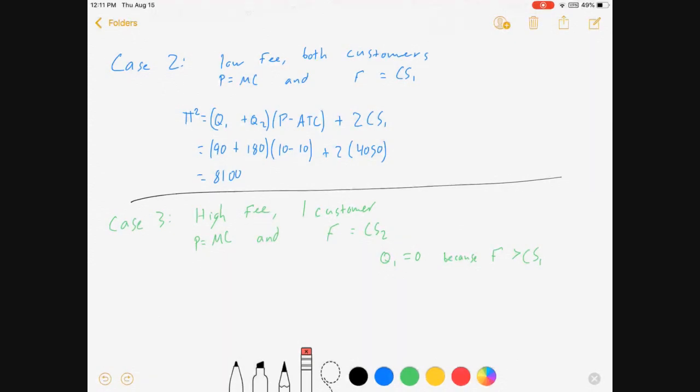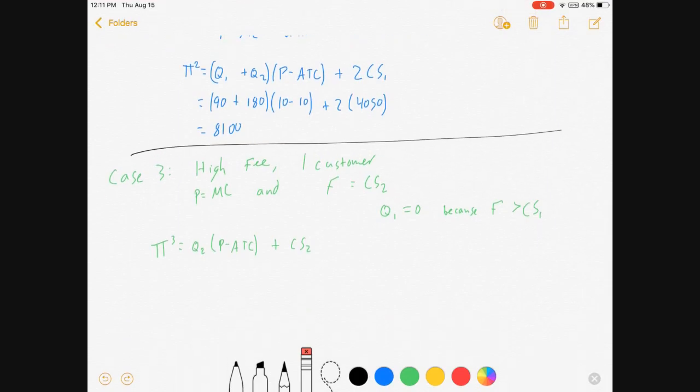Profit then looks like this: Q2 times (P - ATC) plus CS2, which is 180 times 0 plus 8100 = 8100. Case 2 profit and case 3 profits are the same. It's just because of my really simple demand curves.